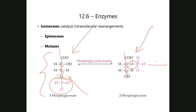There are also epimerases, which convert one stereoisomer to another — for example, converting galactose into glucose, since they are epimers. These are just two of many examples of isomerases. In all such cases, one compound transforms into another, and if you look closely they are actually isomers — the same molecular formula but different arrangements.